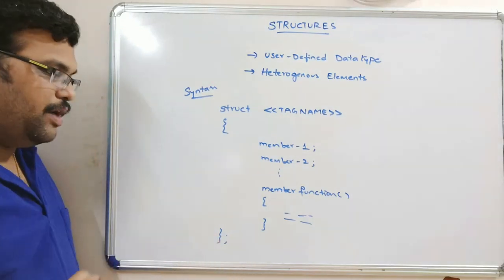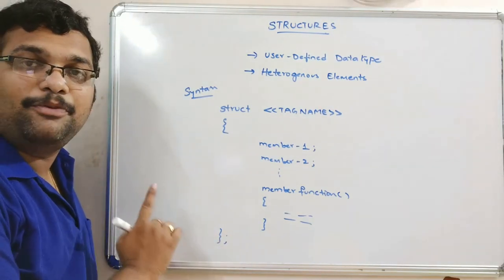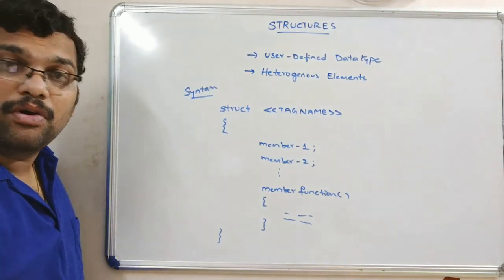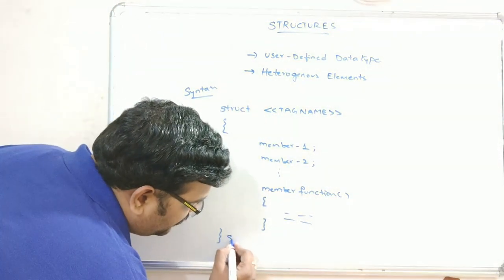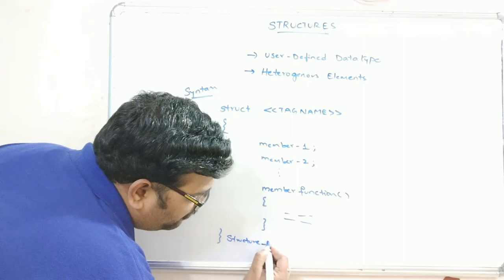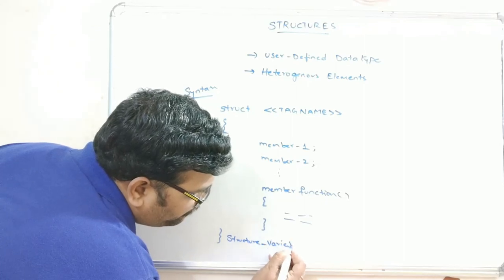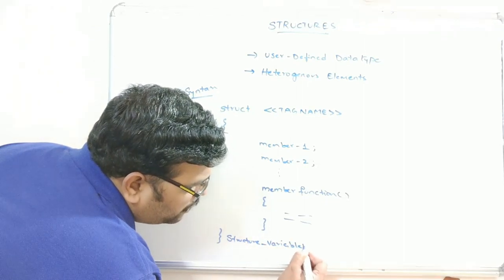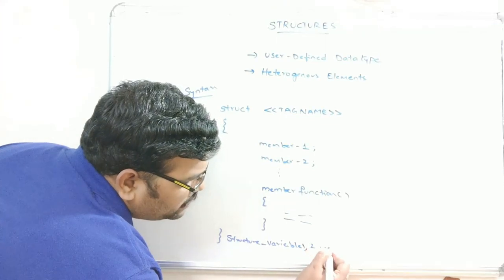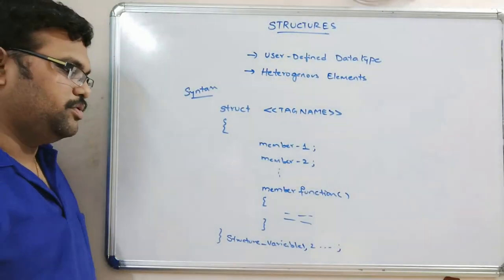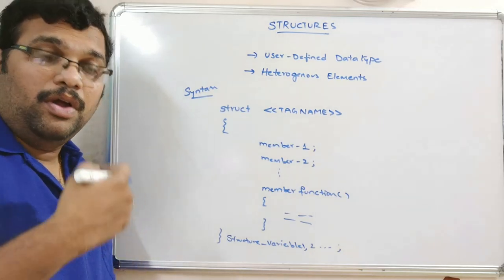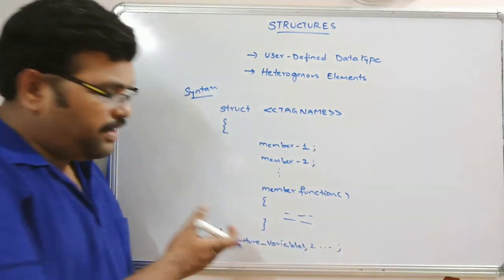We have to end the structure with a semicolon. Before the semicolon, we can declare structure variables — variable one, variable two, and so on. Whatever structure variables you want to create can be written here inside the structure definition itself.